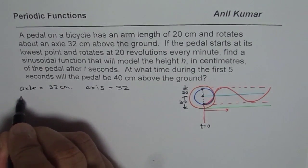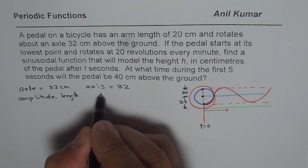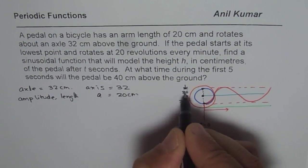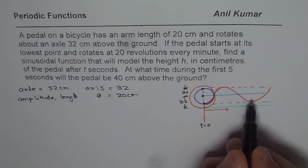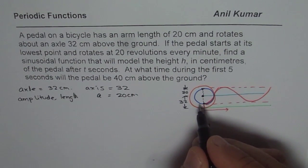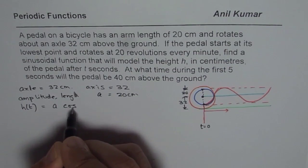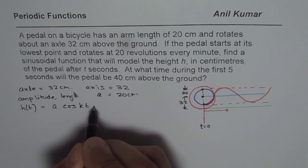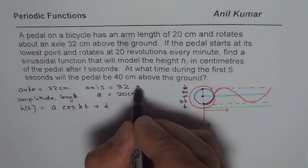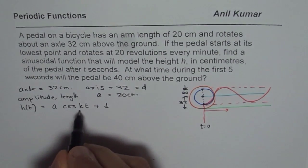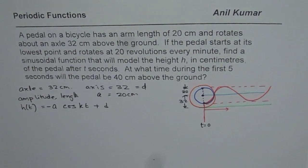The length of the pedal is the amplitude, so amplitude a is 20 centimeters. Since the pedal starts at the minimum, we will use a cosine graph. We write the equation of height in terms of time as h equals a·cos(kt) plus d. Since cosine starts from the maximum but we start from the minimum, we write a negative sign. So the form is h = -a·cos(kt) + d.